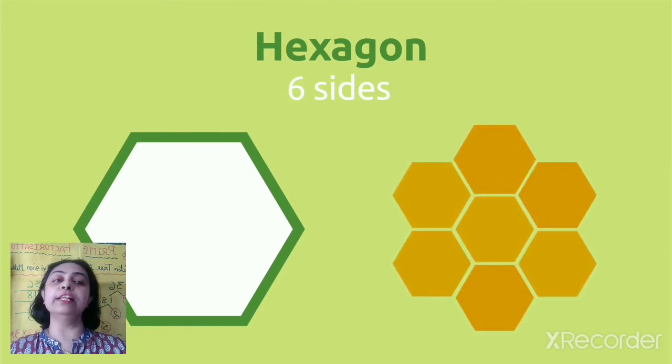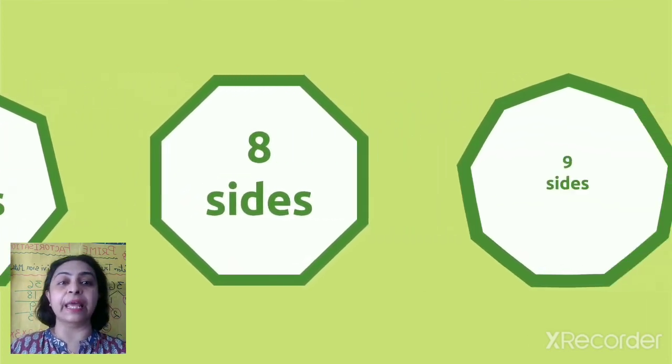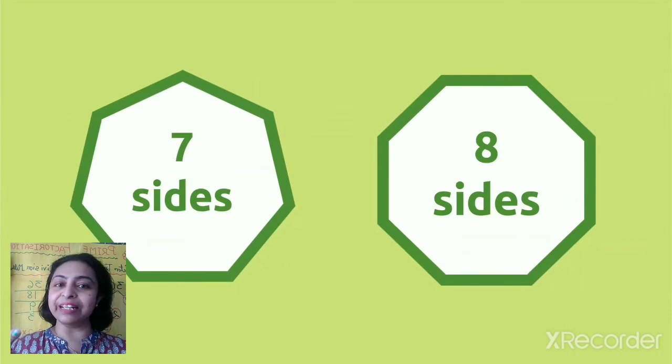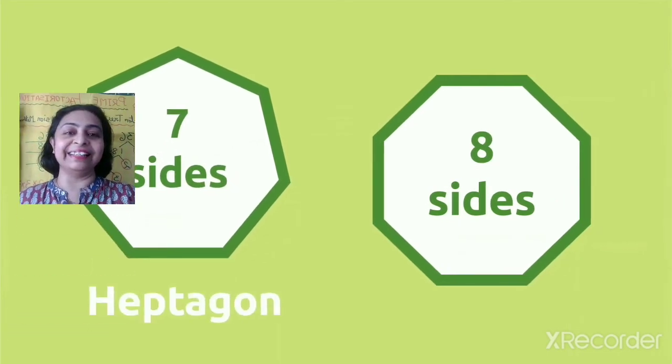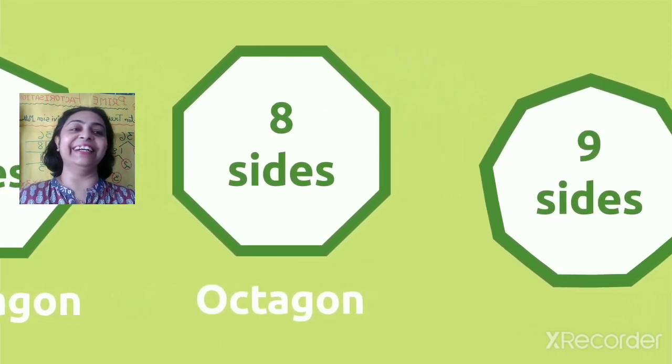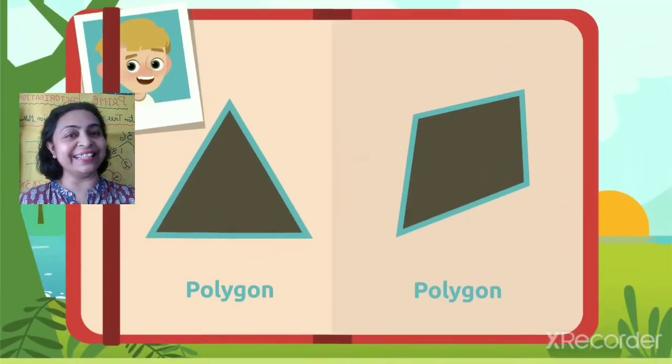Now we'll learn about heptagon. Seven sides - heptagon. Eight sides - octagon. Nine sides - nonagon. Now seven sides, what did I say? Heptagon. Eight sides? Octagon, correct. Nine sides? Nonagon. And ten sides - decagon.